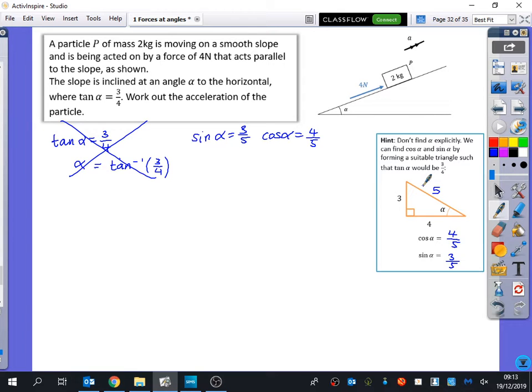Now we've got to this stage. The diagram has been drawn but it doesn't have all the forces on there. Are there any forces we should add? Good, we should add the weight, which would be 2G. And anything else? Yeah, the normal contact force, normal reaction, which is obviously normal to the slope, hence it being drawn like that.